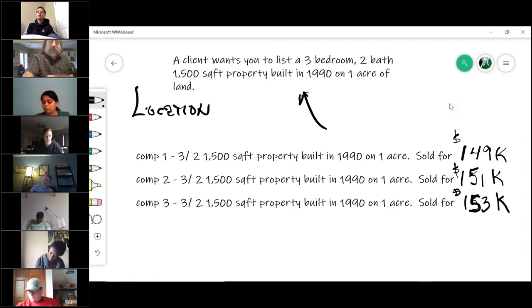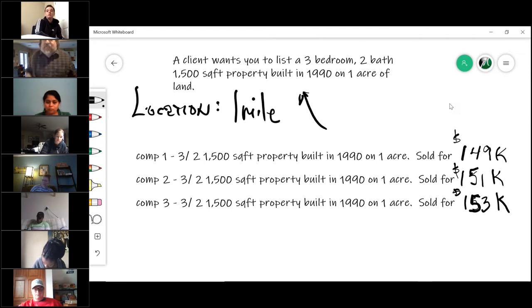Typically the general rule of thumb is you want properties within one mile. That is a rule of thumb. It's not a necessity, because then you start looking at things like 24th and Talbot, which is south of the river here in Indianapolis. You can't go to 34th and Talbot that sits on the other side of the river. That changes the value drastically.